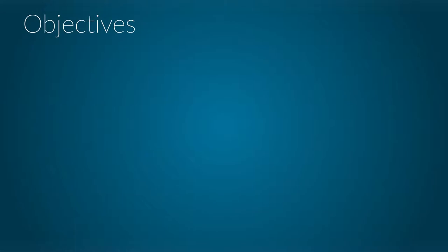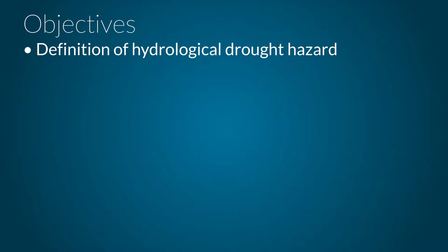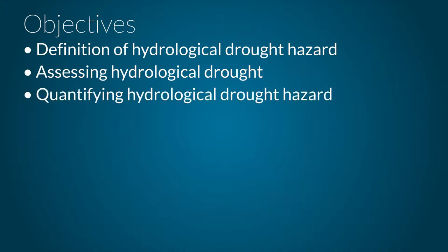The goal of this lecture is to inform you about hydrological drought and how hydrological drought indicators can be quantified at the global scale. First I will clarify the term hydrological drought hazard, and explain what information can be gained from assessing hydrological drought beyond the more widely performed assessment of meteorological drought.